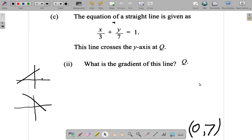Let's look at question 4C part 2 now. Earlier we found that the line crossed the y-axis at 0.7. Now the question is what is the gradient of this line?